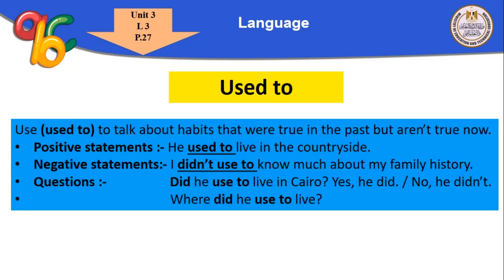For negative statements about habits in the past, we make the negative with 'didn't use to.' For example: 'I didn't use to know much about my family history.' The verb following 'didn't use to' stays in the infinitive.